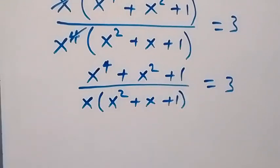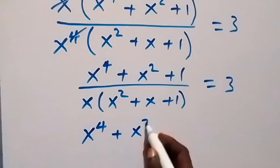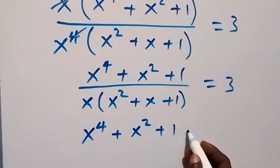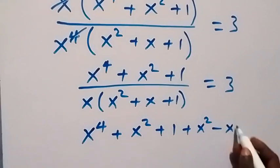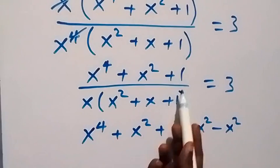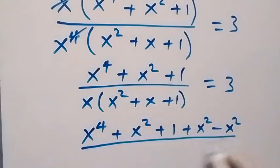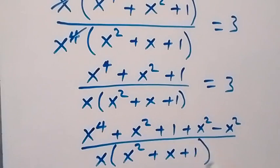In the next step, from what we have up here, let's add x squared and still subtract it. That means we can write the numerator as x raised to power 4 plus x squared plus 1, then plus x squared minus x squared. Over x times bracket x squared plus x plus 1, close bracket, which is equal to 3.